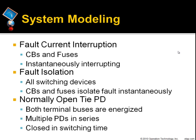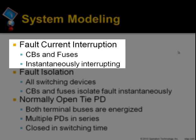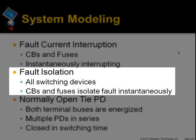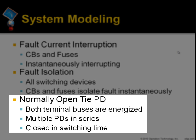For system modeling, ETAP considers the following. For fault current interruption, only overcurrent protection devices such as circuit breakers and fuses can interrupt fault current, and interruption is assumed to be instantaneous. For fault isolation, all switching devices can isolate a fault, but circuit breakers and fuses isolate a fault instantaneously. For normally open-type protective devices, the two terminal buses are energized. Several protective devices can be connected in series with more than one open, and an open-type protective device can be closed in switching time to provide backup power.